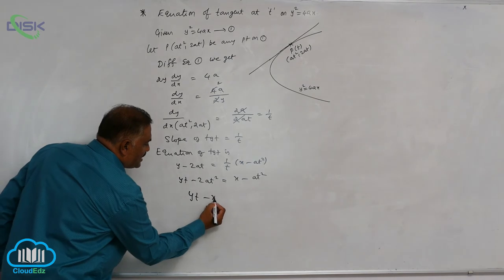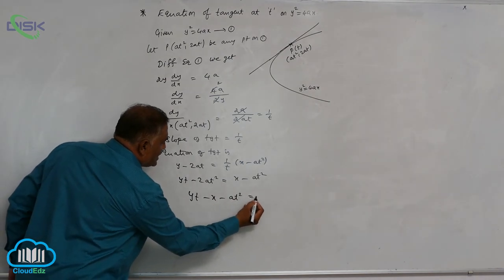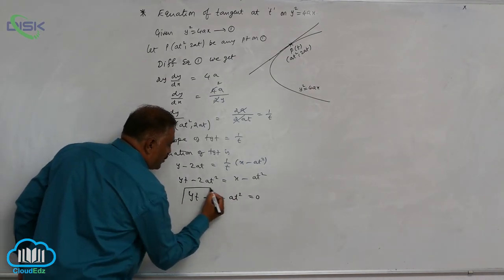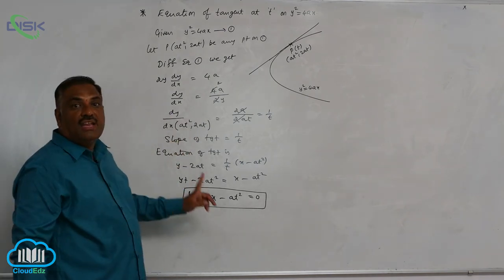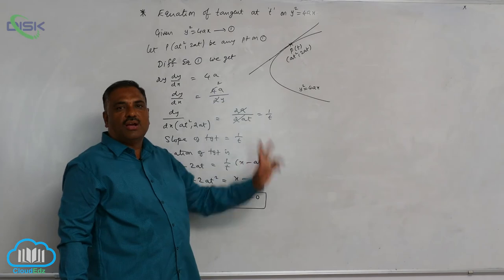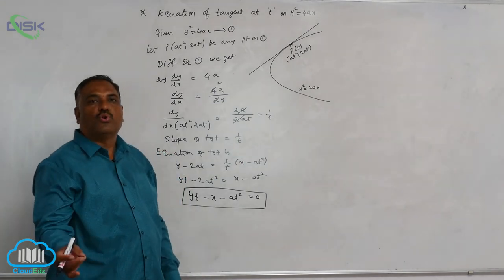This is yt minus x minus at square equal to 0. Now this is going to be equation of tangent at any point t on the parabola y square equal to 4ax.